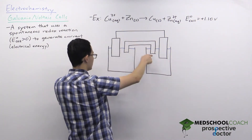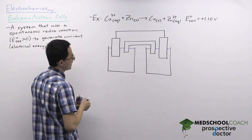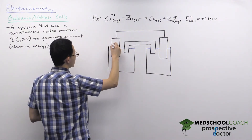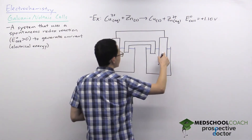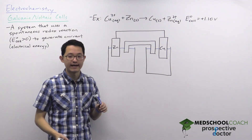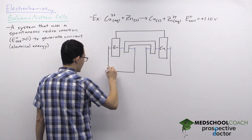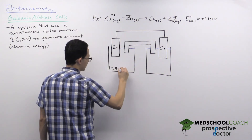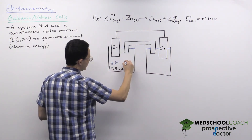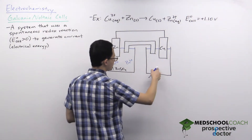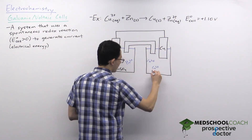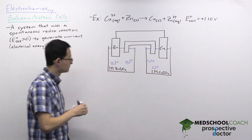There are two electrodes — essentially blocks of metal. One electrode is a block of zinc metal and the other is a block of copper metal. These electrodes sit in solutions with their corresponding cations: the zinc electrode sits in 1 M zinc sulfate solution (containing Zn²⁺ cations), and the copper electrode sits in copper sulfate solution (containing Cu²⁺ cations).